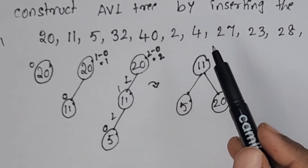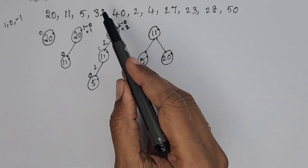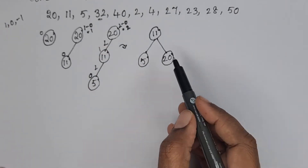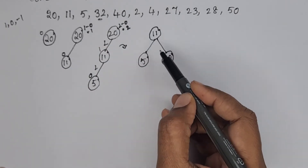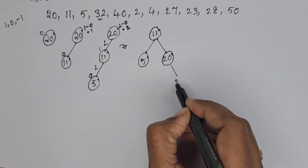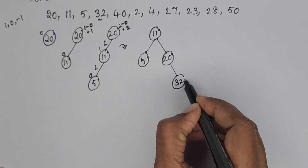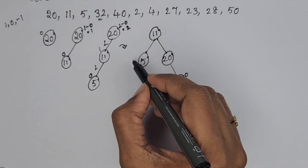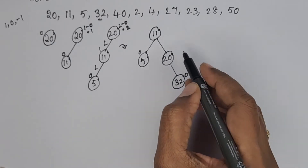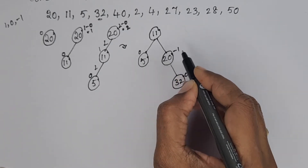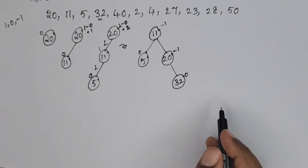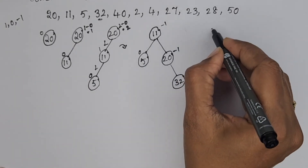The next element is 32. Since 32 is greater than 11 and greater than 20, we insert 32 to the right of 20. The balance factors are: 32 is 0, 5 is 0, 20 has no left subtree so 0 minus 1 = -1, and 11 has balance factor 1 minus 2 = -1. The tree remains balanced.